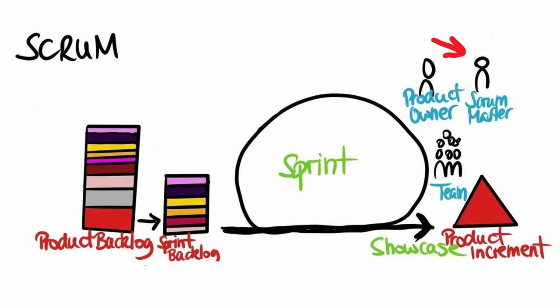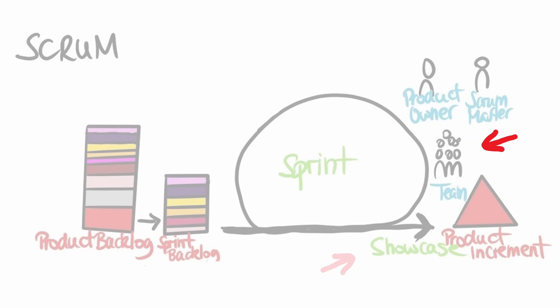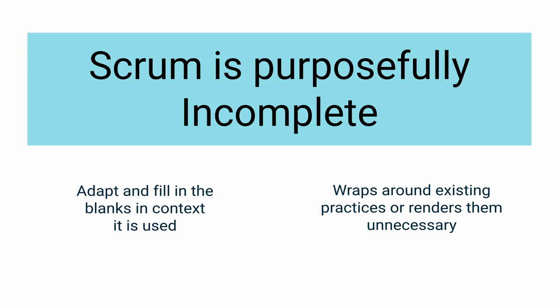In a nutshell, Scrum requires a Scrum Master to foster an environment where a product owner orders the work for a problem into a product backlog. The Scrum team then turns a selection of that work into an increment of value during a sprint. The sprint team and its stakeholders inspect the result and adjust for the next sprint. Rinse and repeat. The framework is purposefully incomplete, only defining the parts required to implement Scrum theory, so we need to adapt and fill in the blanks for the context in which we use it. Scrum wraps around existing practices or renders them unnecessary.